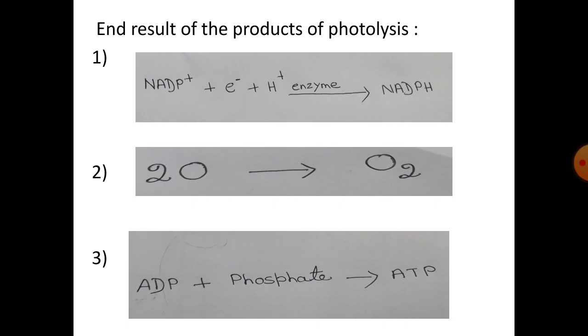This process is called phosphorylation, that means addition of phosphate. But as energy is used in this process and that energy has come from light, from photons, this process is also termed as photophosphorylation.